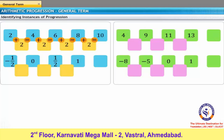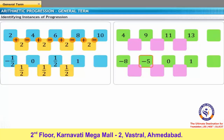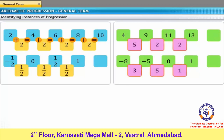Now, let us look at another sequence with fractions: minus 1/2, 0, 1/2, 1, and so on. In this sequence, the constant is 1/2. Consider the following sequences: 4, 9, 11, 13, and so on, and minus 8, minus 5, 0, 1, and so on. You can see that there is no constant between the terms in either of these sequences. Based on this data, it will not be possible to obtain the next term in any of these sequences because there is no visible pattern.